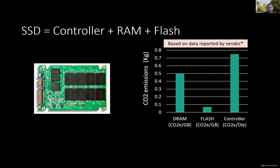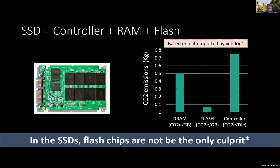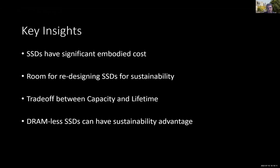SSDs have different components beyond just the flash chip — there's also DRAM on the SSD card, a controller, and a bunch of flash chips. Data derived from a vendor's sustainability report suggests there is significant complexity in thinking about SSDs, because embodied cost could come from DRAM or from an intelligent controller on-chip.